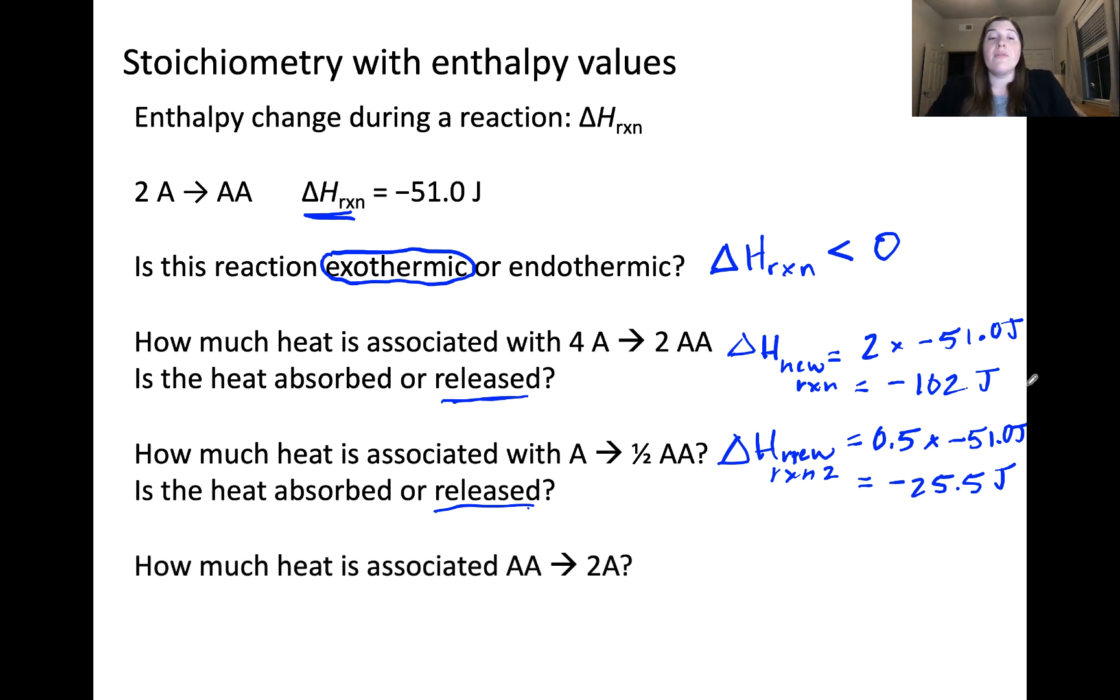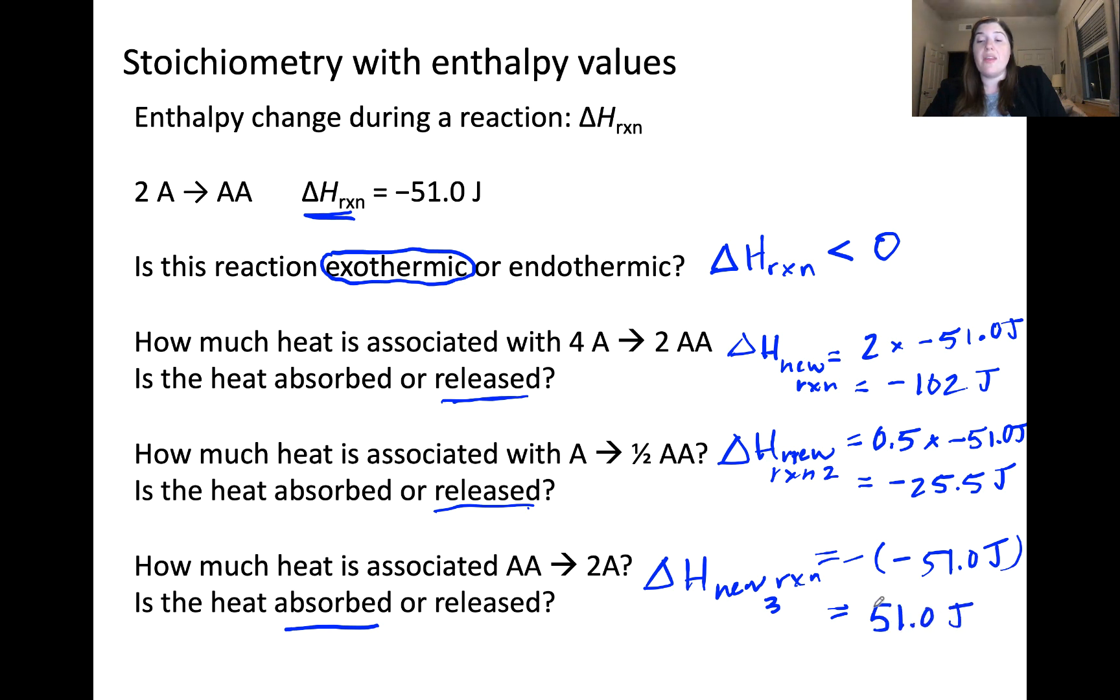Now, what if we had the reverse of our reaction, AA going to 2A? In this case, heat would be absorbed because we've flipped this reaction, meaning what were previously our products are now our reactants. To calculate delta H of our new reaction, we'll call it new reaction 3. This would be equal to the original enthalpy, negative 51.0 joules, but it would have the reverse of the sign. So delta H of our new reaction 3 would be positive 51.0 joules. This is now an endothermic reaction because heat is absorbed.